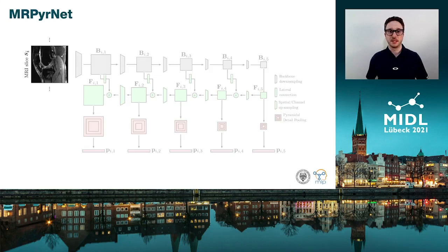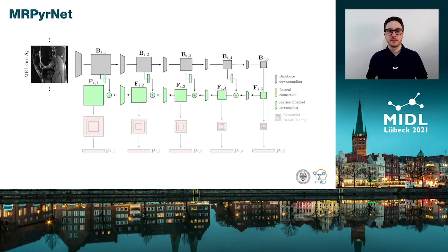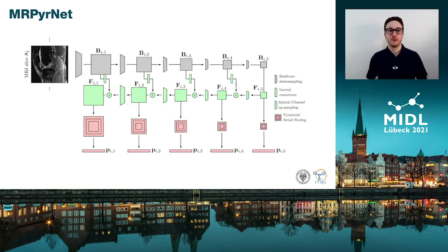The model receives an input MRI slice. A backbone CNN is executed on it in order to obtain feature representations at different semantic levels. Such representations are processed by the feature pyramid network, which enhances them to better detect small impairing features. At this point, the pyramid detail pooling extracts the disorder information by analyzing the feature maps at multiple levels of detail. Overall, at each semantic level, the produced output is a vector which includes detailed information about the contents of the MRI slice.